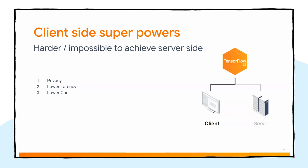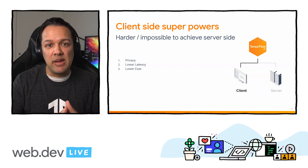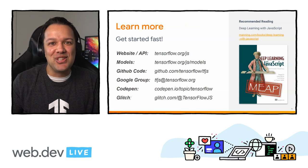Running machine learning client-side gives you key superpowers. First, privacy: because we're running in the web browser, none of that data is ever sent to a server for classification, so you can access sensor data in a privacy-preserving way. Second, lower latency: with no server involved, there's no round trip time — you cut that out completely by running on the edge. Third, lower cost: instead of spending tens of thousands of dollars on server-side GPUs and CPUs, you use the hardware of the client. If there's one slide to screenshot from today's talk, it would be our resources page.